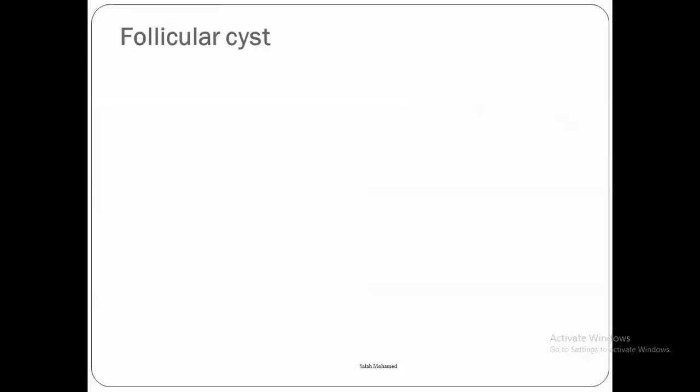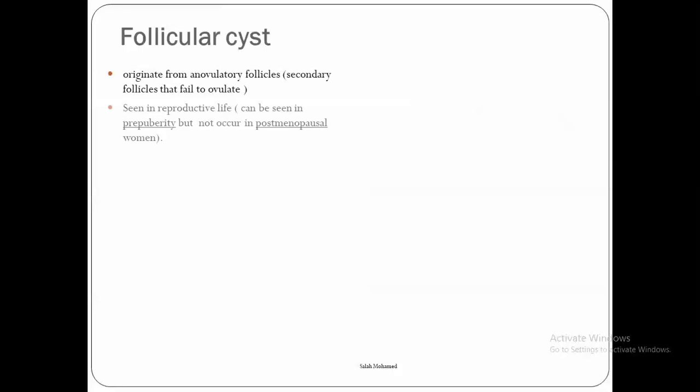Coming first to follicular cysts. As we said, they originate from secondary follicles that fail to ovulate. They are seen in reproductive life, but can also be seen in pre-puberty, as in juvenile hypothyroidism. They may be single or multiple, spontaneous or induced. The induced type is usually multiple and may occur because of drugs used in ovulation inductions or stimulations.